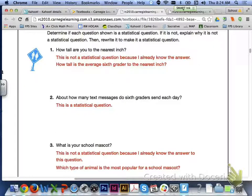Number one asks us, how tall are you to the nearest inch? This would not be a stat question because you already know the answer. How tall is the average sixth grader to the nearest inch would be a better way to write that as a stat question because we are asking a population and we don't know the answer to the question.